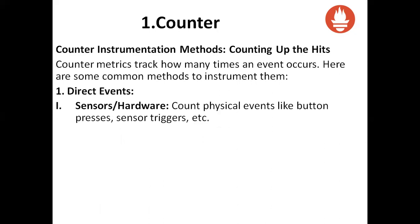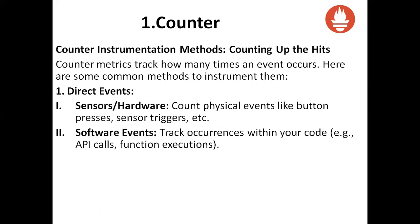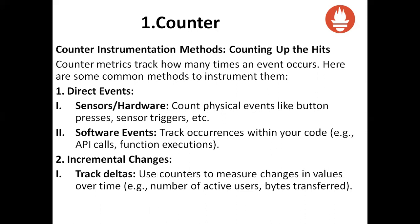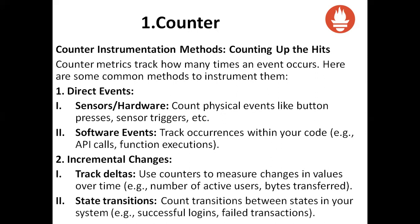Direct event: it calculates from sensors or hardware — counting physical events like button presses, sensor triggers, etc. Software events track occurrences within your code like API calls, function executions. Incremental changes use counters to measure changes in values over time, like number of active users or bytes transferred. State transitions count transitions between states in your system — how many times successful logins happen or failed transactions in e-commerce.